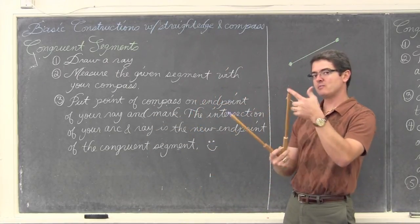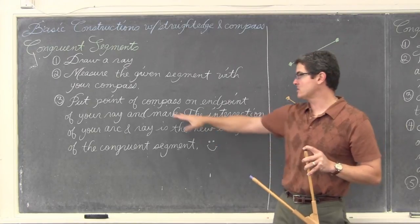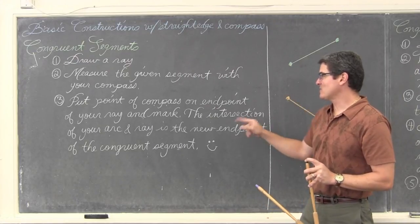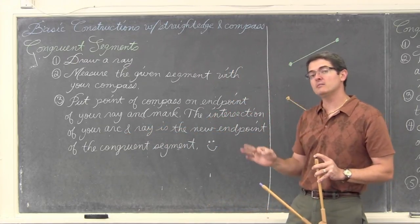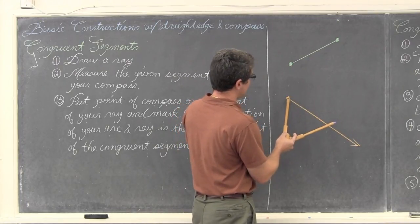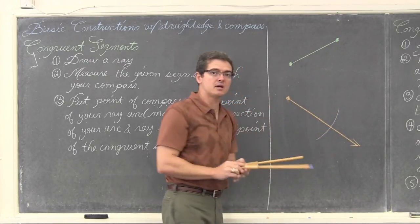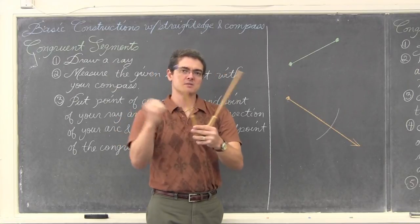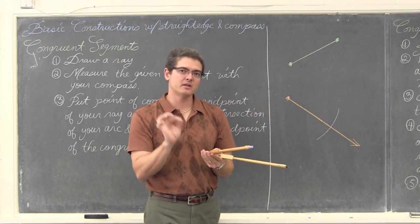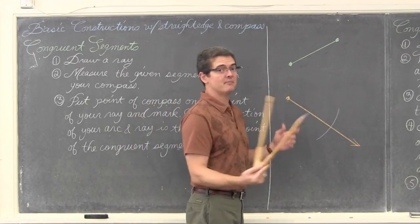Then this can be my compass on my other segment. If you wanted to sort of improvise with some random string maybe and let that along with your finger act as a compass. But we have a compass, so we are going to measure that. We are going to put the point of your compass, the sharp needle-ish point of your compass on the end point of your ray and mark. We are going to do that by rotating the compass and making an arc which is going to be our mark. The intersection between the arc that you draw and the ray is going to be the new end point of your congruent segment which you are attempting to draw.